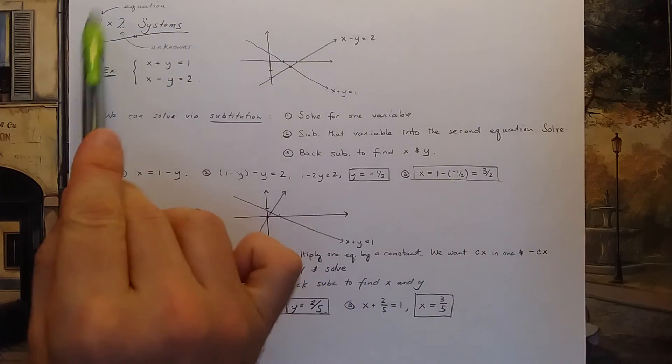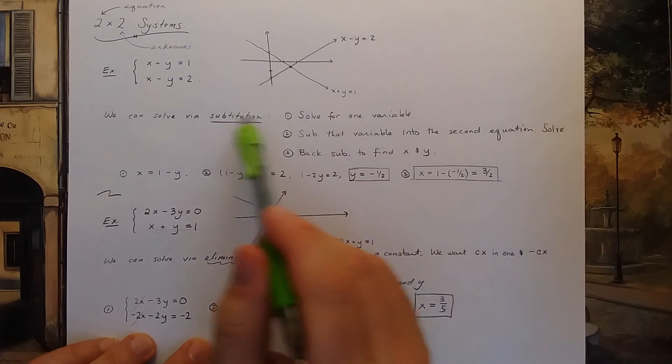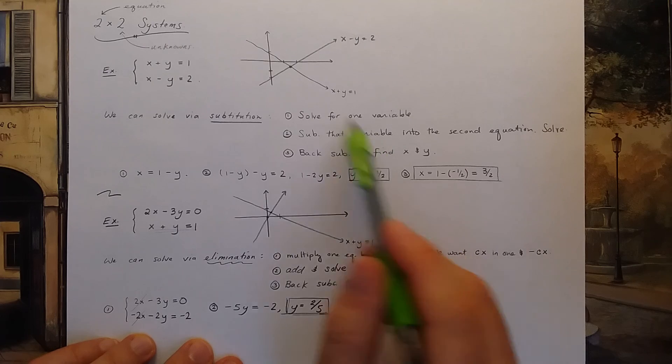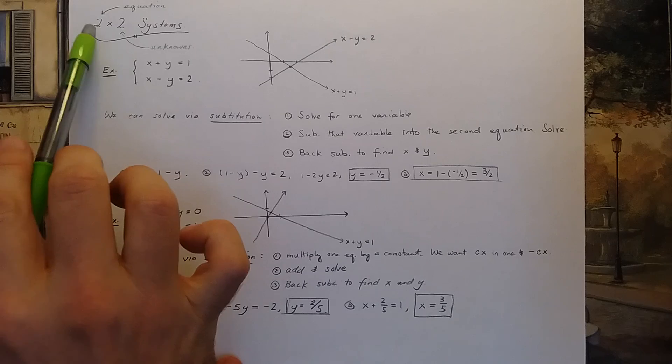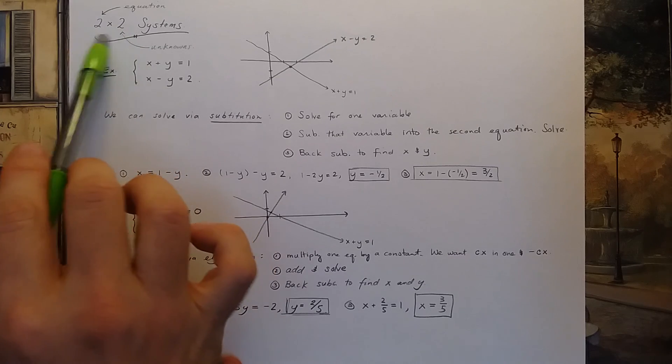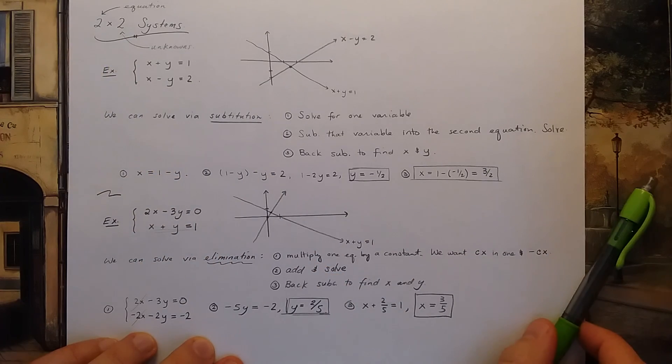So these are two methods to solve 2 by 2 linear systems. The substitution method is great. Most students love that. But the elimination method is what will generalize more easily to higher systems that have more than two equations or two unknowns. Alright, wonderful.